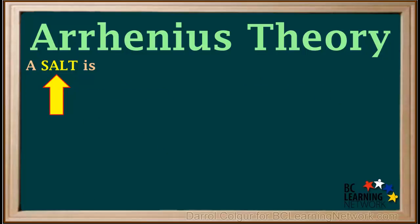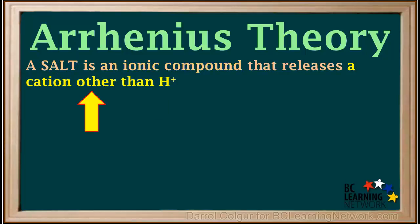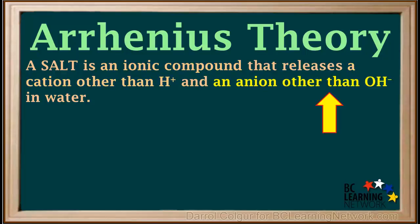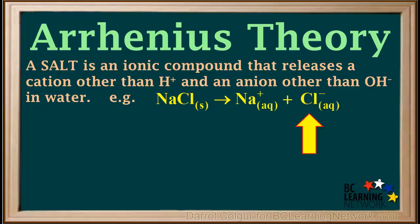The other type of ionic compound Arrhenius defines is a salt. A salt is an ionic compound that releases a cation other than H+ and an anion other than OH- in water. An example is the common salt sodium chloride NaCl. NaCl dissociates into Na+ ions and Cl- ions. So a water solution of NaCl would contain mobile Na+ and Cl- ions.